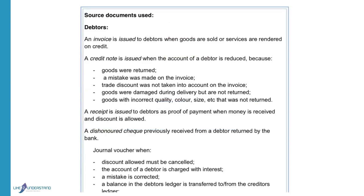Source documents used in connection with debtors: When goods are sold, an invoice is issued to the debtors because we are selling goods or rendering services on credit. A credit note is issued to a debtor to reduce his account because he returned goods, a mistake was made on the invoice, a trade discount was omitted, goods were damaged during delivery but not returned, or goods were delivered with incorrect quality, colour, or size that the debtor is prepared to keep but wants a discount for. A receipt is issued to a debtor as proof of payment when money is received and discount is allowed when his account is paid.